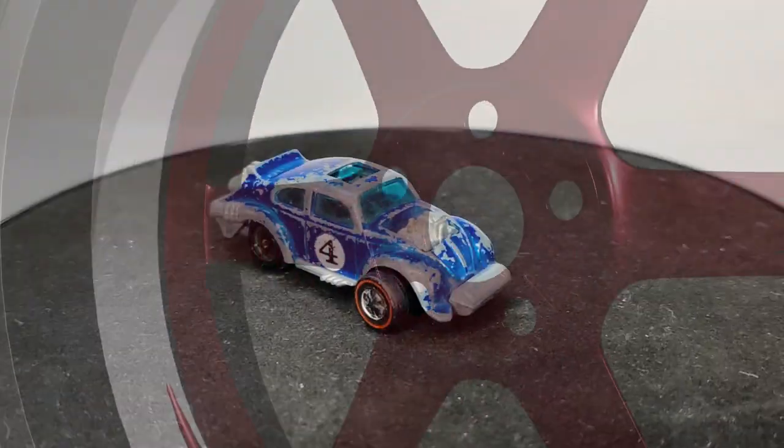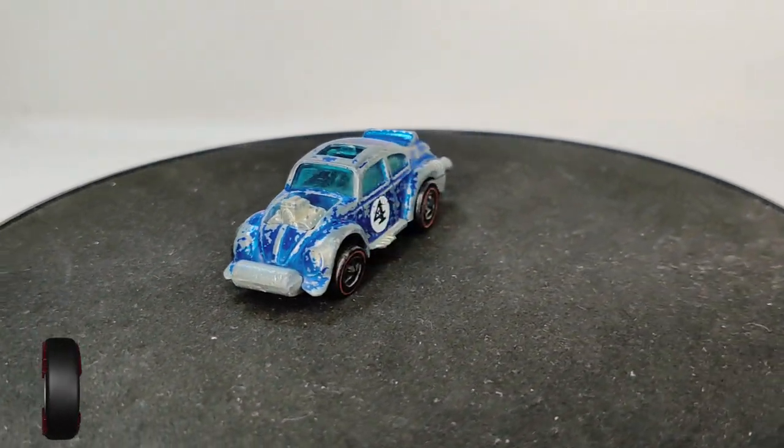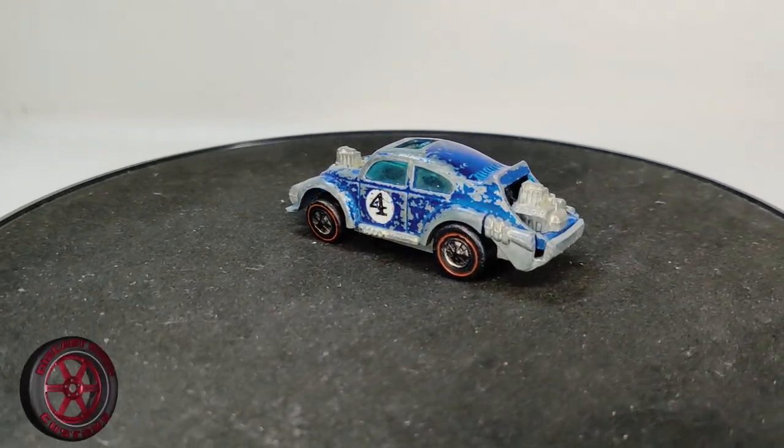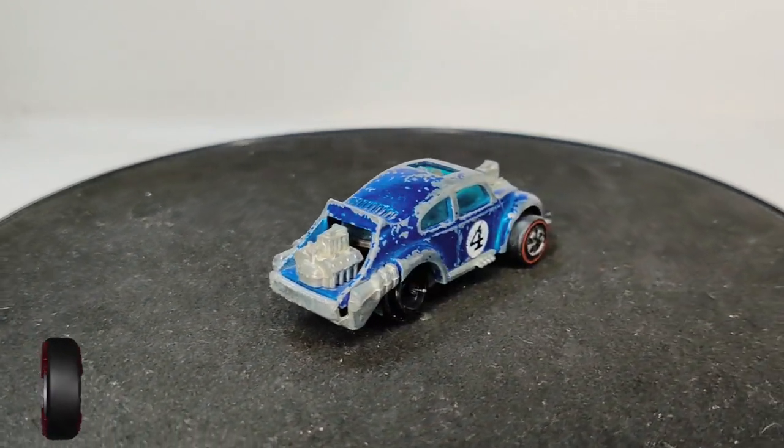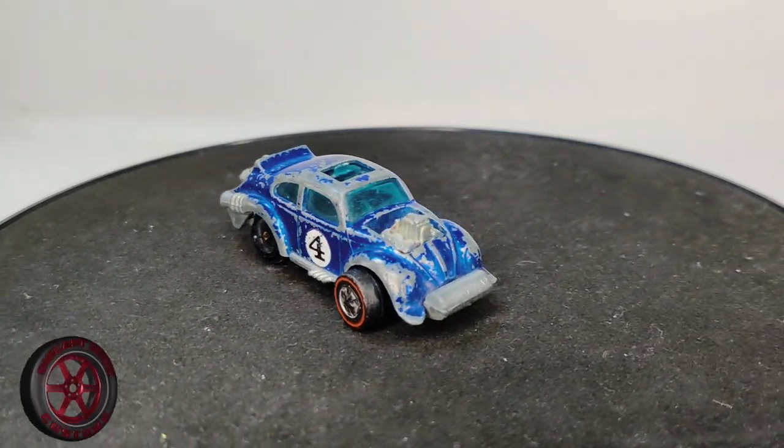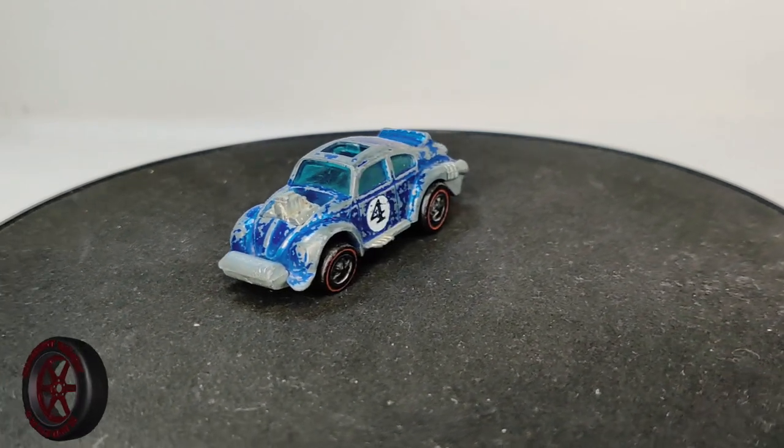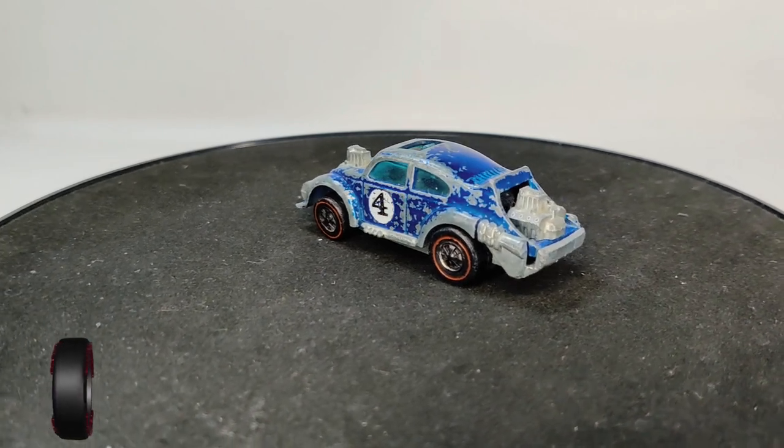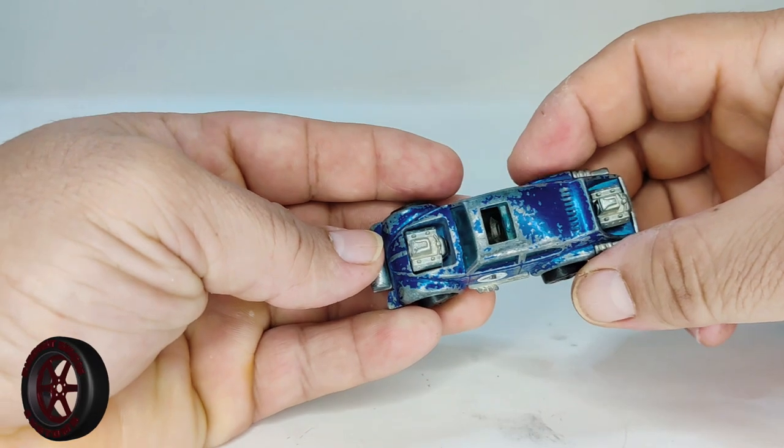All right guys, welcome back to the channel. Today we are restoring a 1971 Evil Weevil. It's available in a few colors and came with a sticker sheet. Basically a blown-out Volkswagen, it has two metal engines, one in the front and one in the back. Very similar to the Sweet 16 custom Volkswagen, but not quite. The Evil Weevil is narrower and skinnier.